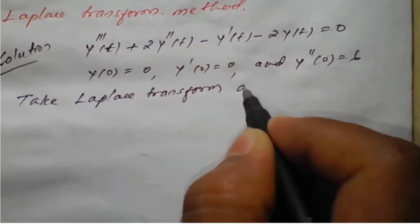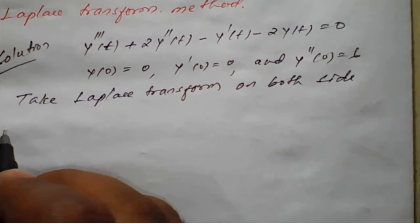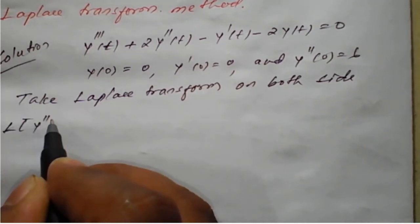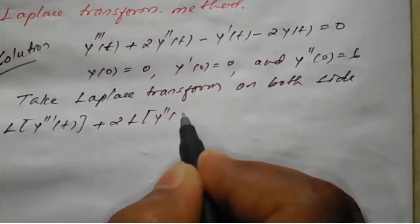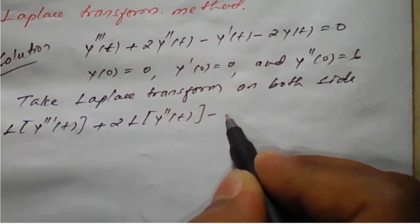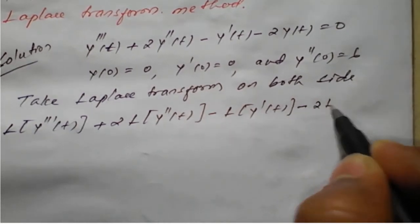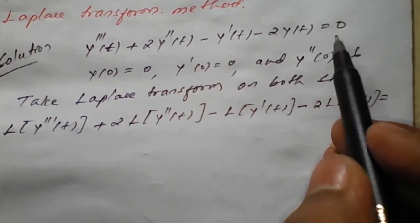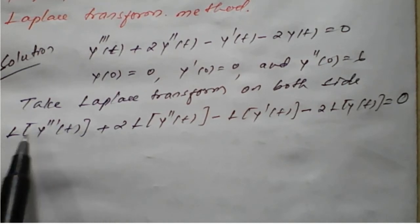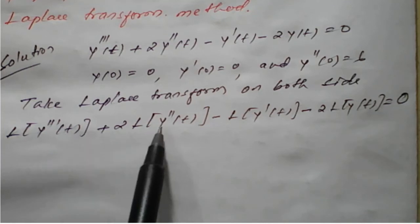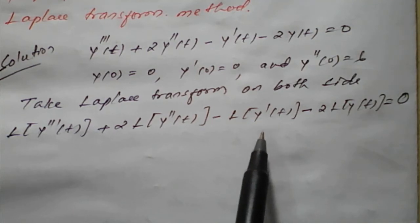Taking Laplace transform on both sides: L of y triple dash of t plus 2 times L of y double dash of t minus L of y dash of t minus 2 times L of y of t is equal to L of 0, which is 0. We need to write the expressions for L of y triple dash of t, L of y double dash of t, and L of y dash of t.